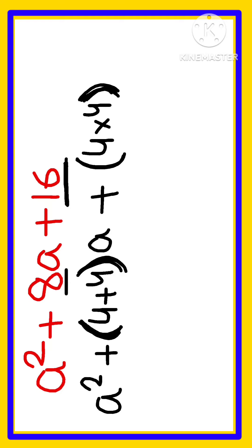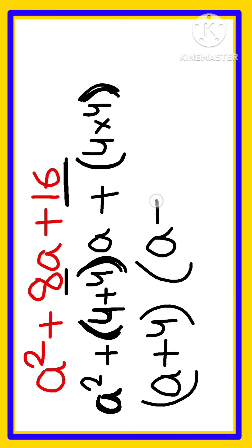We can write this expression as: a (the variable) plus the first number, which is 4, so a + 4. Again, we write the variable a plus the next number, also 4, giving us a + 4.